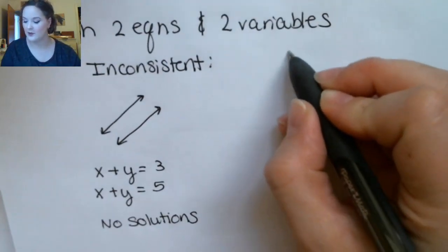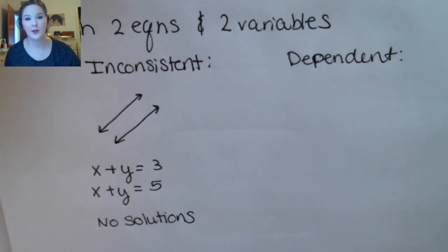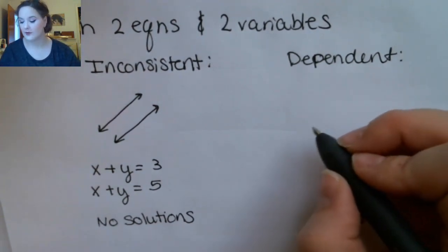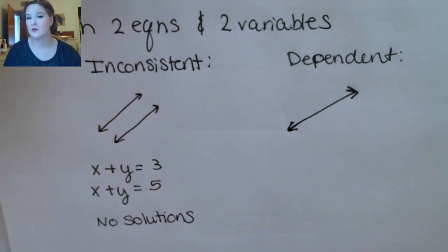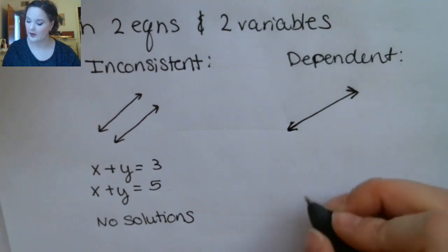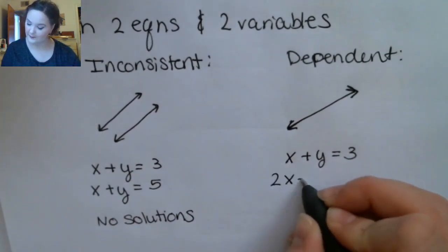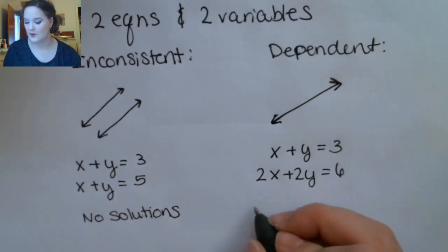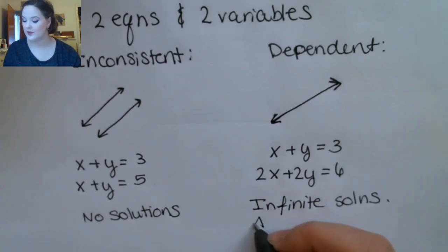What about a dependent system? If you have a dependent system, it means one of the equations can be rewritten as the other equation. In terms of what the graph looks like, you draw the first line and then when you graph the second line, it goes right over the same line. You can identify a dependent two-by-two system because there's only one line on the graph. When you look at the equations, you'll see one is a multiple of the other. For this type of system you have infinite solutions — all the points on the line are solutions.